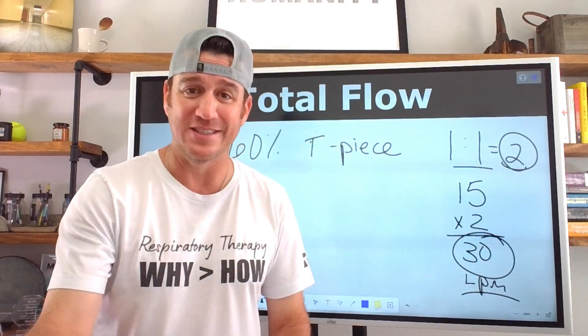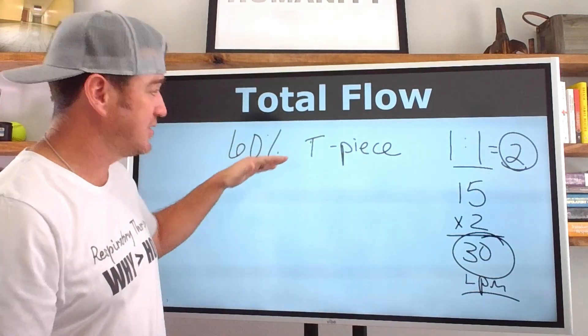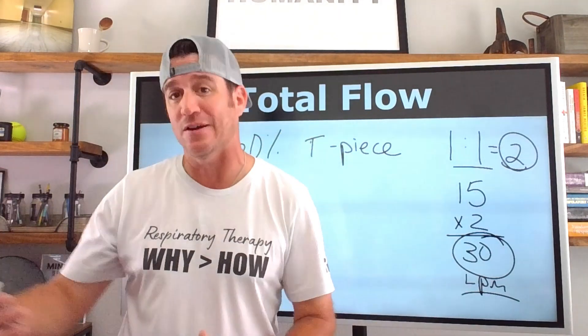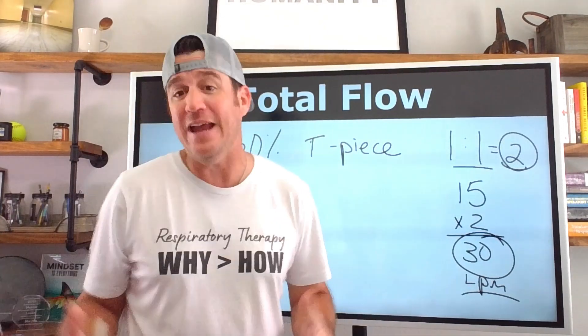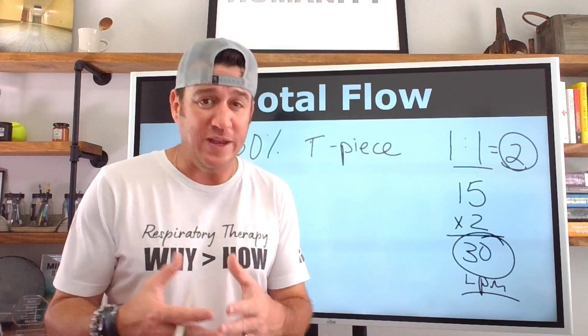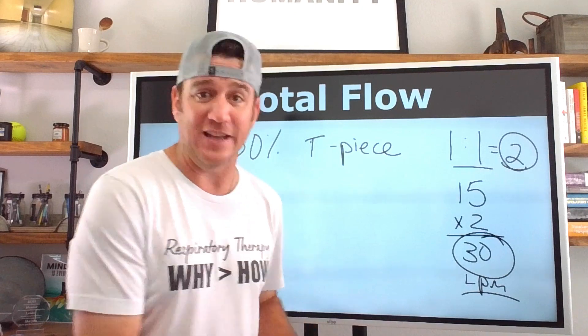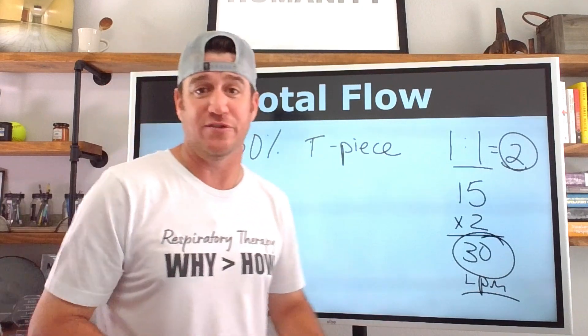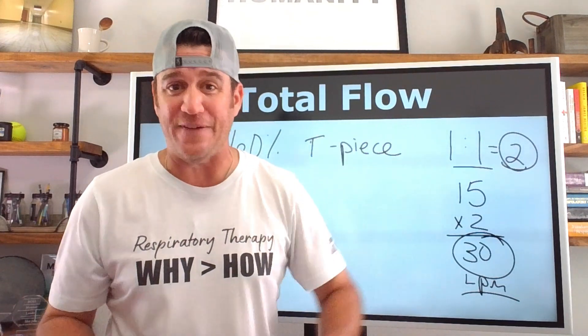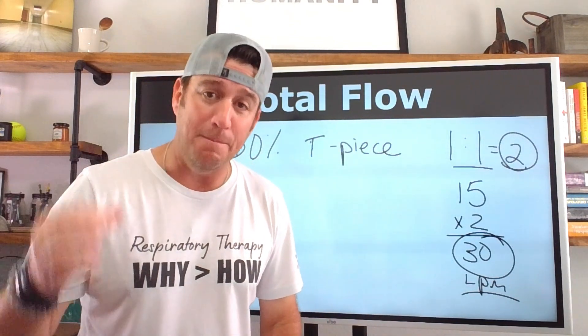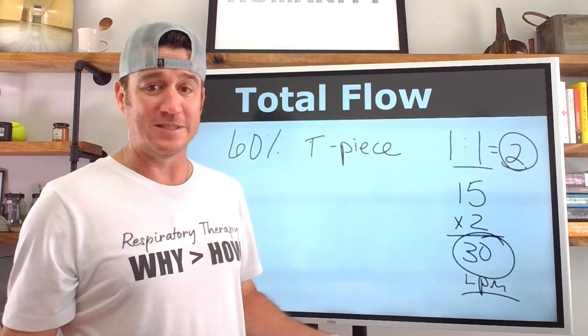So the question is, is that enough flow to do the job of a 60% tee piece, trach collar, face mask, aerosol mask, whatever it is you're utilizing. And the answer is, it might be because what we know, and to do a quick review on high flow oxygen devices, which are what your air entrainment devices are.